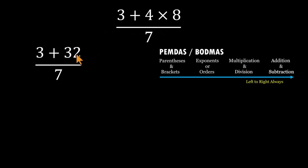Four times eight equals 32. Now bring in the three. Three plus 32 equals 35. And finally divide the whole thing by the denominator. 35 divided by seven equals five.